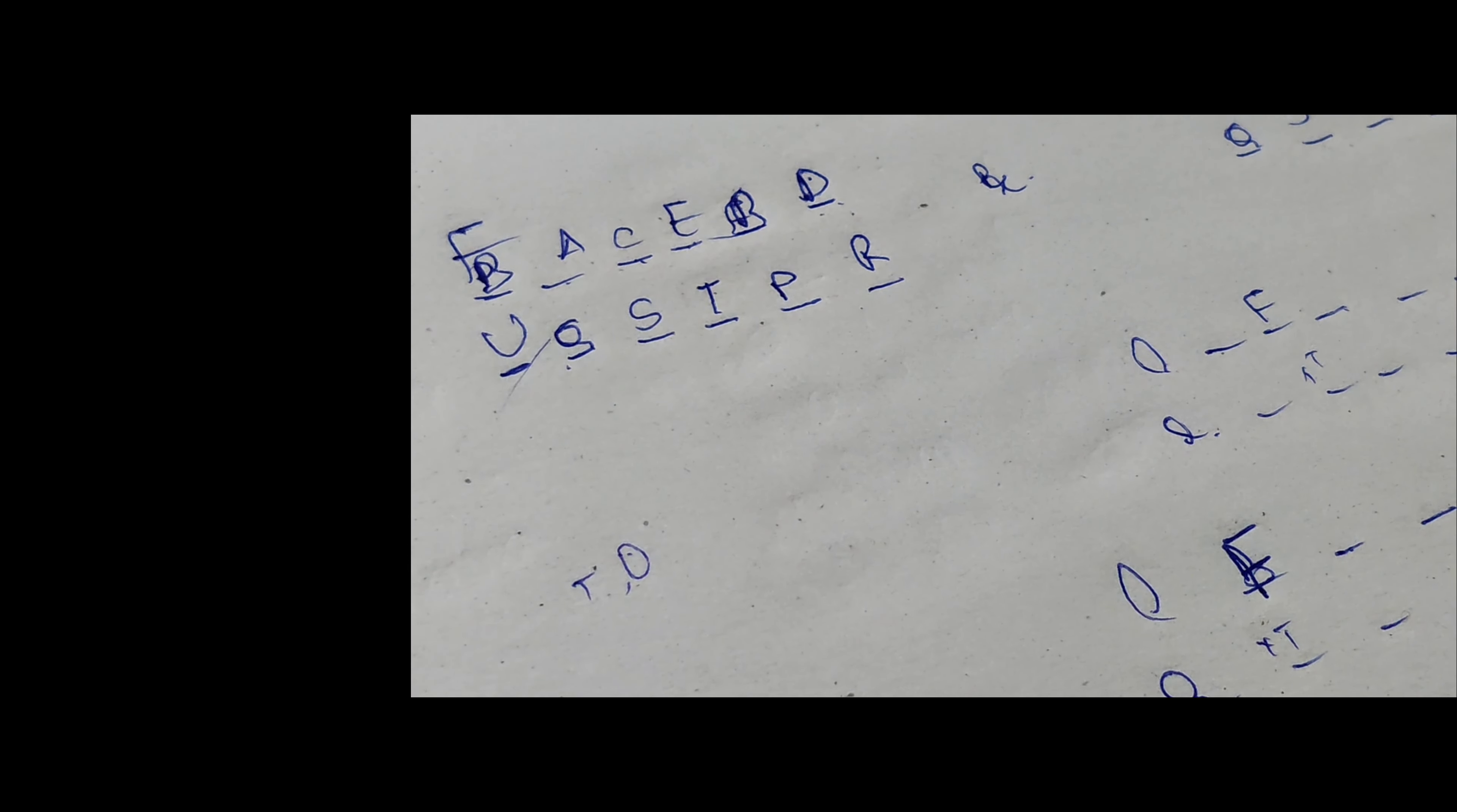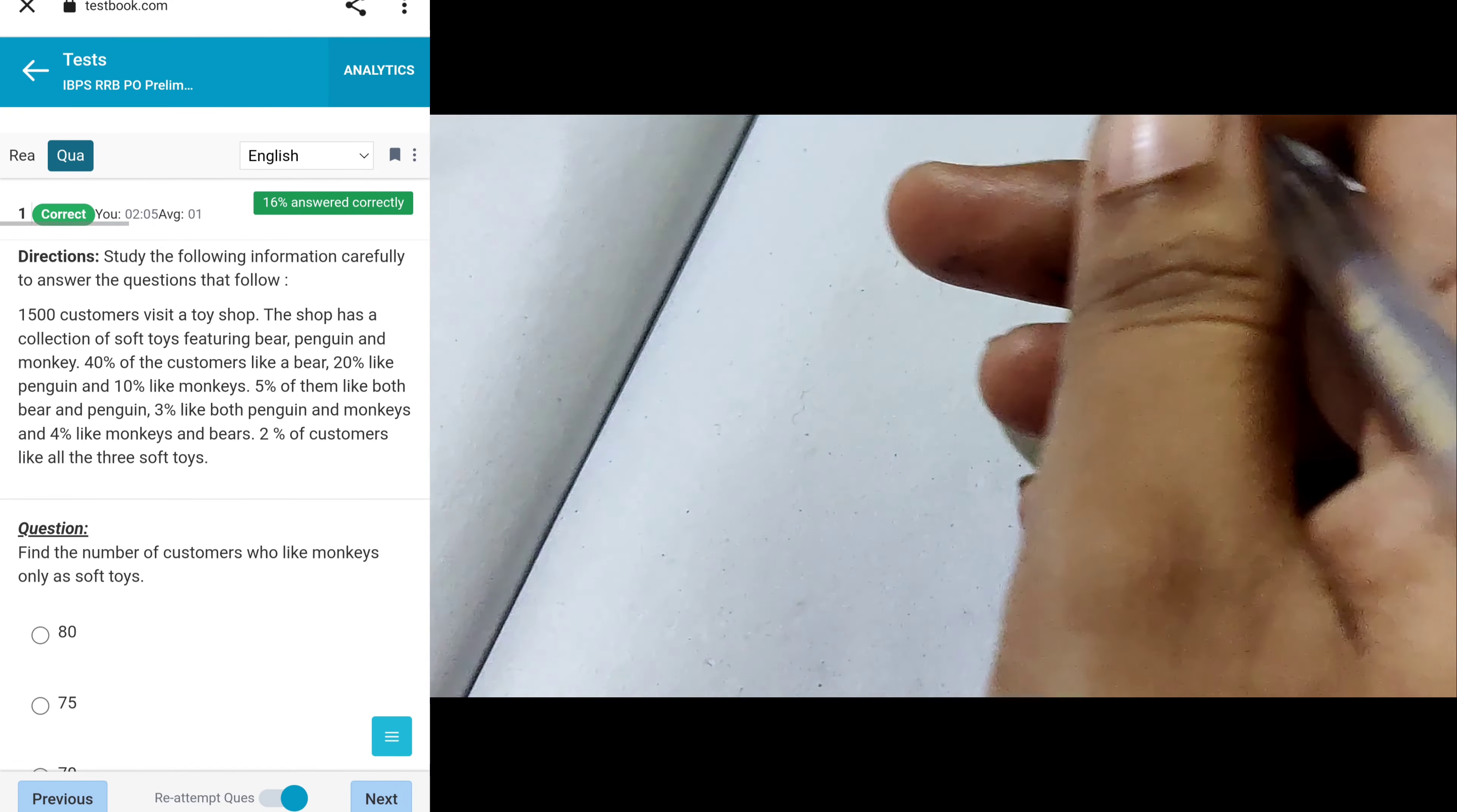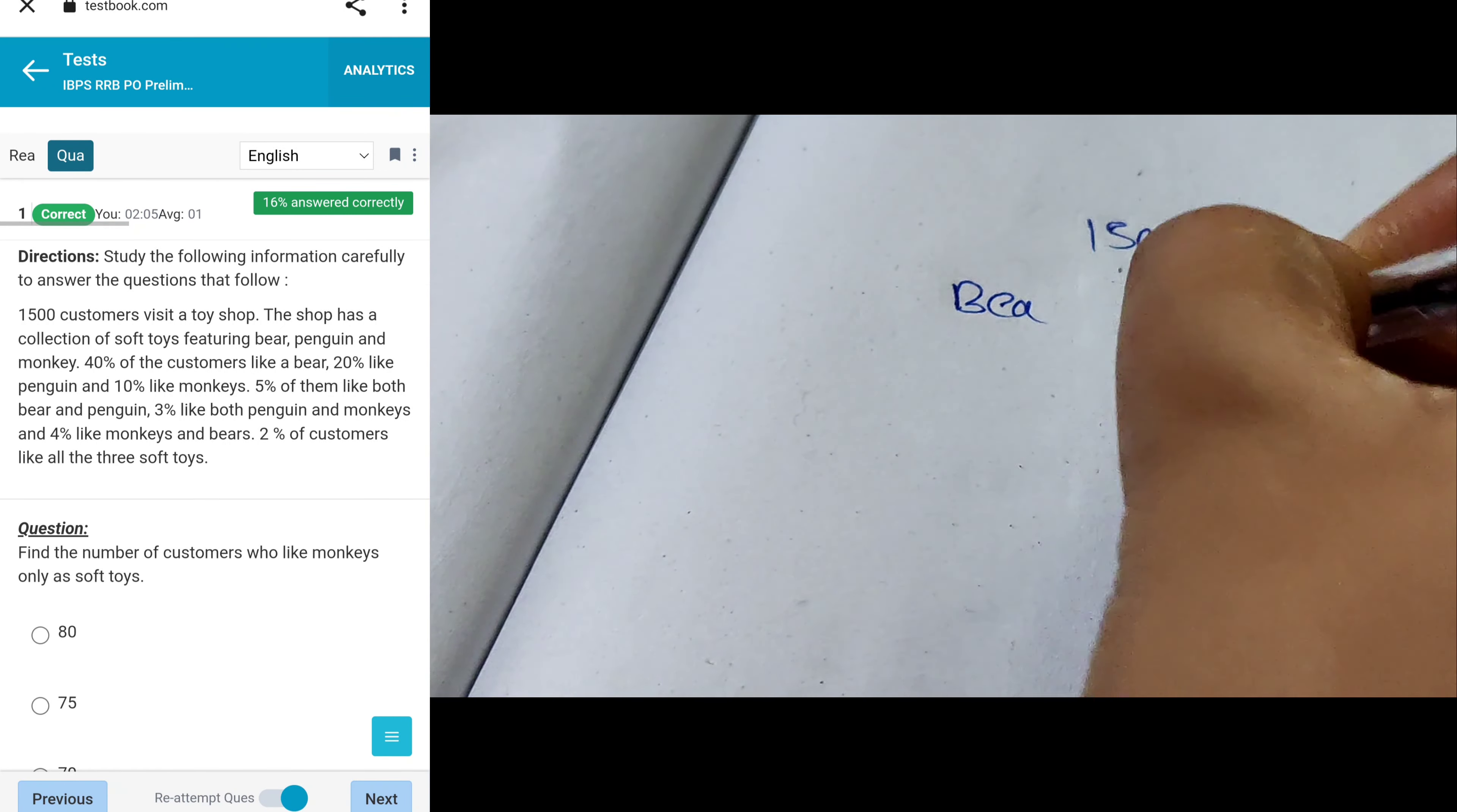The first question is based on data interpretation. 150 customers visited a toy shop. The shop has a collection of soft toys featuring bear, penguin, and also monkey.